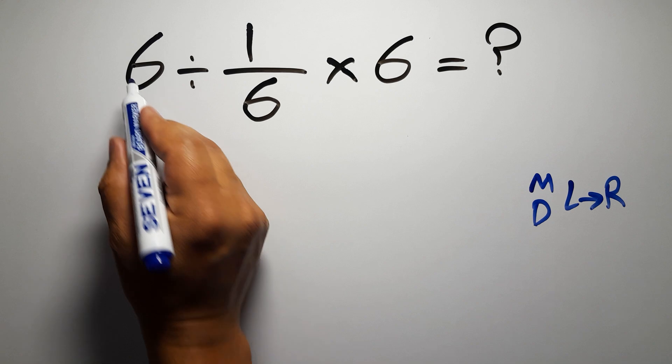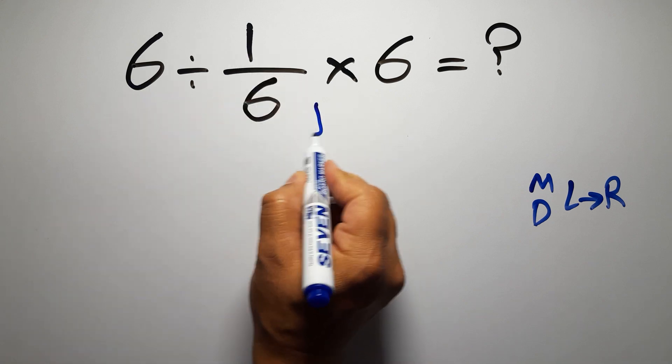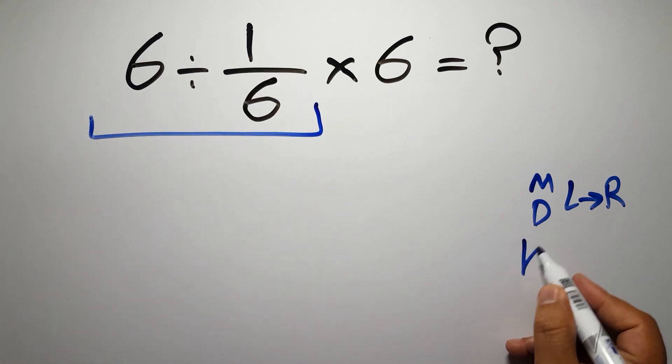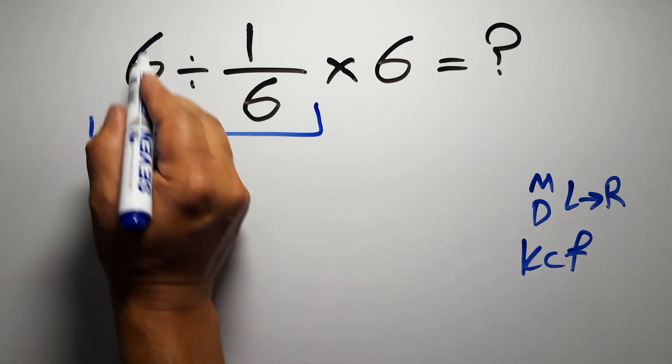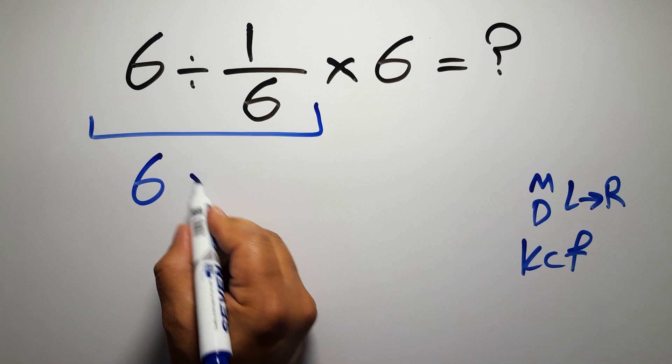So first, this division: 6 divided by 1 over 6. According to the KCF rule, K stands for Keep, C stands for Change, and F stands for Flip. We can write: keep the first fraction, change the division to multiplication, and flip the second fraction.